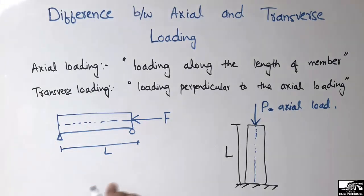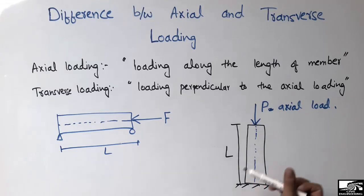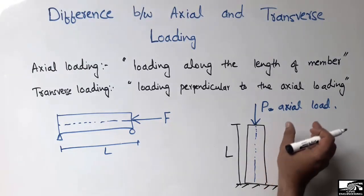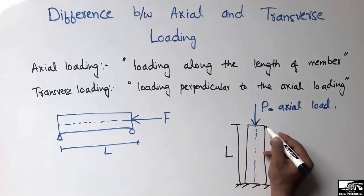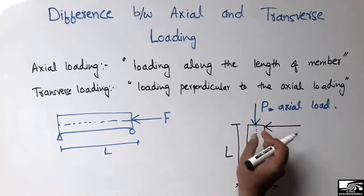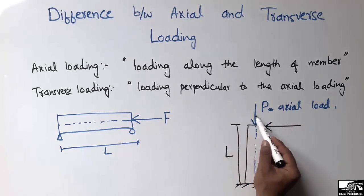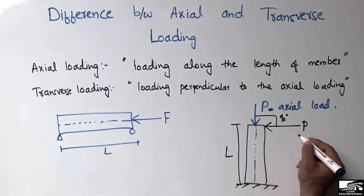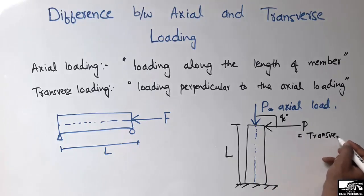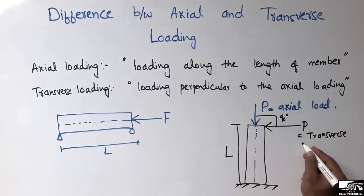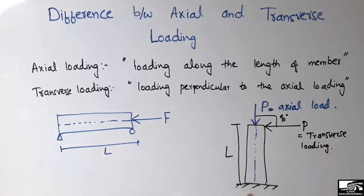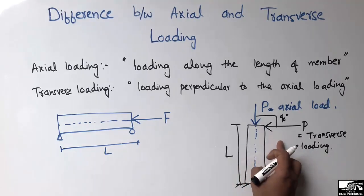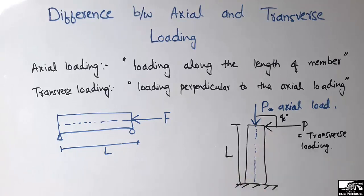Transverse loading is the loading which acts perpendicular to the axial loading. If you consider a column, the load acting perpendicular to the axial direction — making an angle of 90 degrees with the axial loading — is called transverse loading. This may be a lateral load like wind load or seismic load in the case of a column.